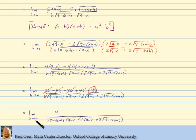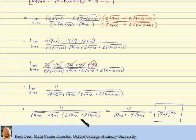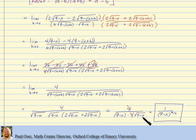Is there still a problem plugging in h equals 0? Look what happens: x plus 0 is just x, so the denominator becomes square root of 9 minus x times square root of 9 minus x times 2 times square root of 9 minus x plus 2 times square root of 9 minus x. That product is not going to be zero for all x, so we can plug in 0. Then square root of 9 minus x times square root of 9 minus x is 9 minus x, and we have 2 plus another 2 — that's 4. A common factor of 4 cancels, leaving 1 over 9 minus x times square root of 9 minus x, which is 9 minus x to the 3 halves power. That is our derivative, f prime of x.